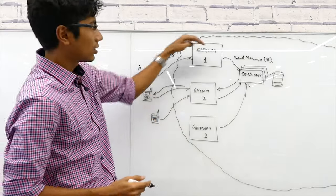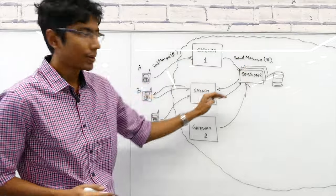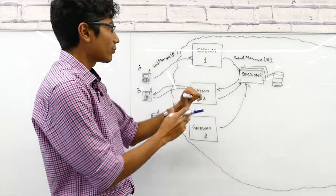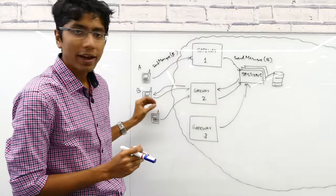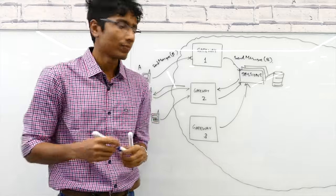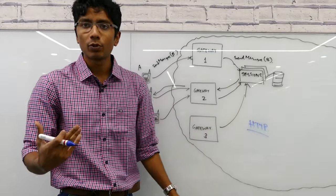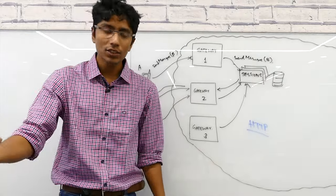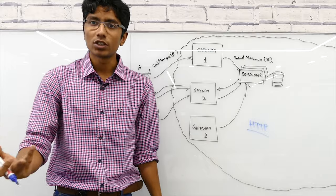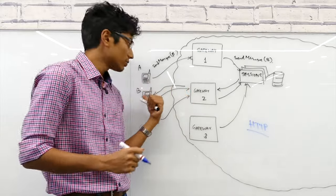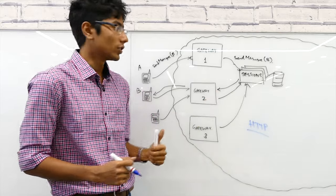Now A has sent a message to B — but how can A send a message to B if it's the server (gateway 2) sending the final bit to B? This can't be done using HTTP. HTTP is a client-to-server protocol — the client sends requests, the server gives responses. So you cannot push a message from the server to the client.